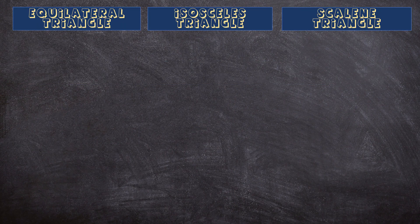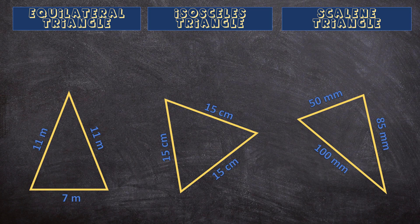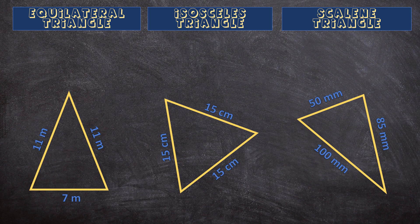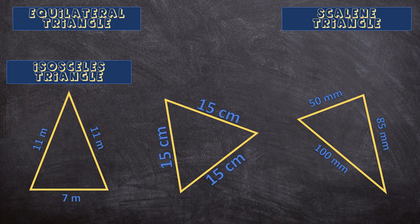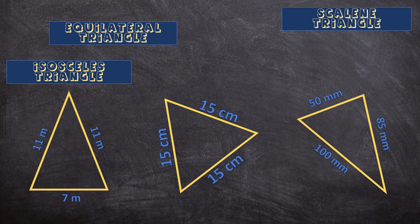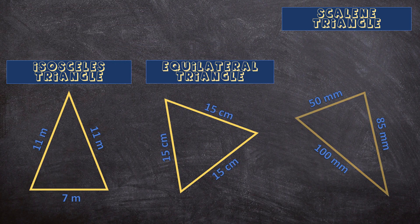Now let's classify the next three triangles, but this time we use the measurements to classify them according to their sides. For the first triangle on the left, we can see that two of the sides have the same length — so this is an isosceles triangle. For the triangle in the middle, all three sides are equal in length, so this is an equilateral triangle. And for the last triangle on the right, all three of the sides have a different length, so this is a scalene triangle.